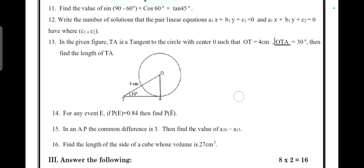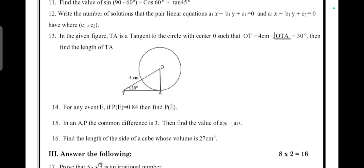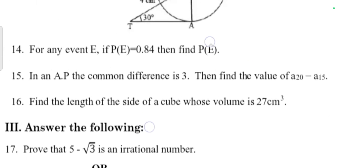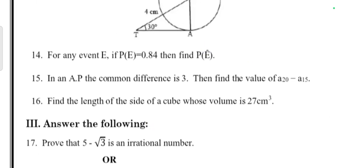In the given figure, TA is the tangent of a circle with center O such that OT = 4 cm and angle OTA = 30°, then find the length of TA. For any event E, if P(E) = 0.85, then find P(E'), that is 1 - 0.85.